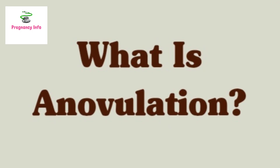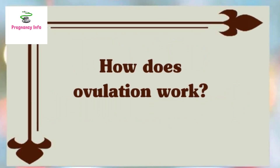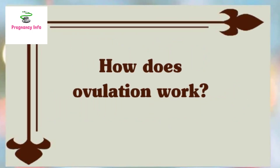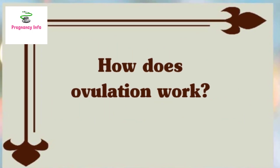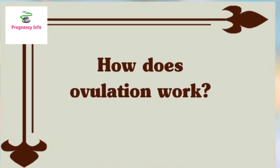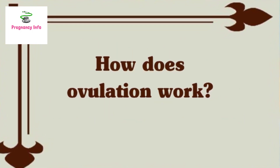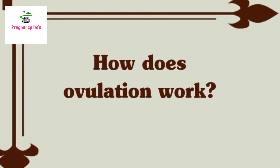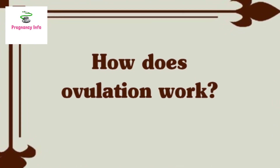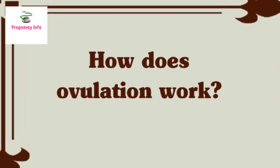Chronic anovulation is a common cause of infertility. How does ovulation work? Ovulation is the release of an egg from your ovary. Ovulation is part of the menstrual cycle; on average, it happens on day 14 of a 28-day menstrual cycle.